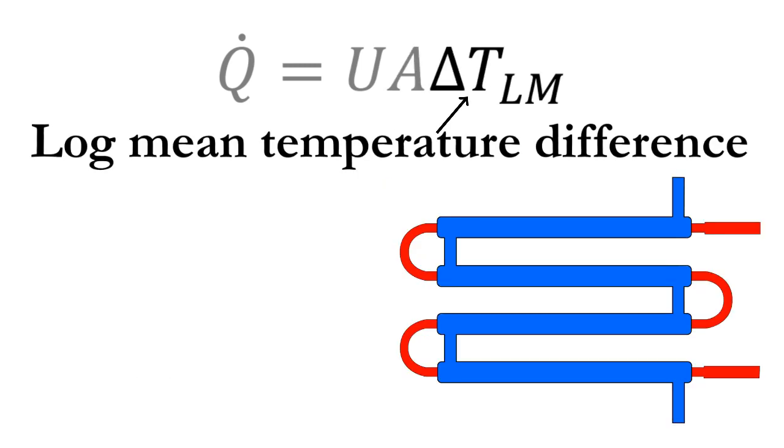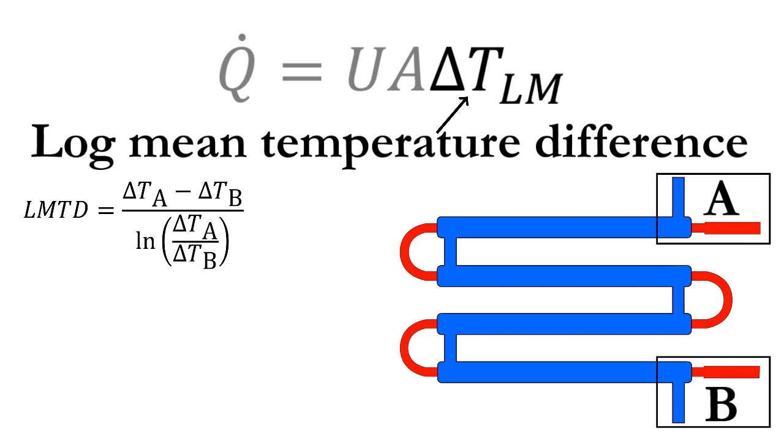The last term is the log-mean temperature difference, which is the driving force for heat flowing from the hot to the cold fluid. This is a function of delta TA and delta TB, which are the differences between the hot and cold fluid at two different locations in the heat exchanger.